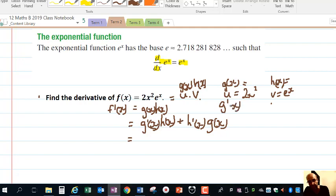The derivative of 2x squared is 4x. The derivative of h of x is the derivative of e to the x, which is e to the x. So we have 4x and e to the x. So g dash of x is 4x. h of x was e to the x. h dash of x is e to the x. And g of x was 2x squared.